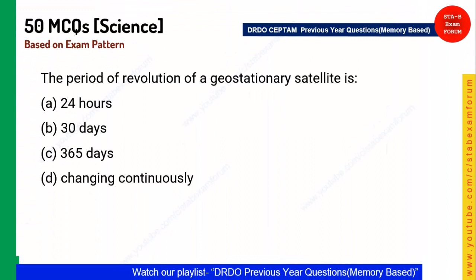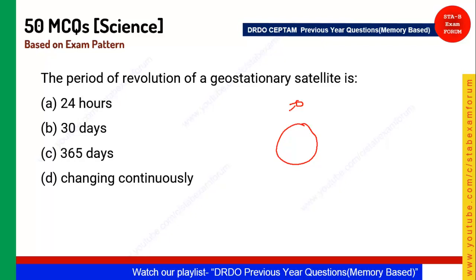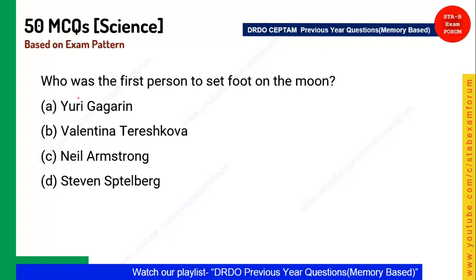Next question: What is the period of revolution of a geostationary satellite? A geostationary satellite remains stationary relative to Earth — it moves along with the Earth. Since Earth's revolution period is 24 hours, a geostationary satellite also has a period of 24 hours.